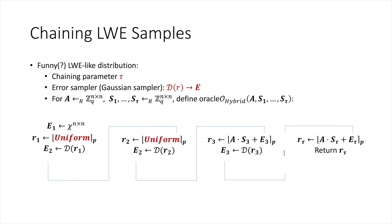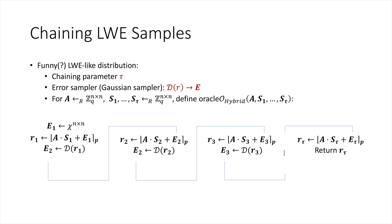This in turn implies the second iteration A·S2 + E2 is computationally indistinguishable from uniform by LWE, and we can repeat this argument for the entire chain to show that the final output is uniformly random. But why define this oracle in this fashion?